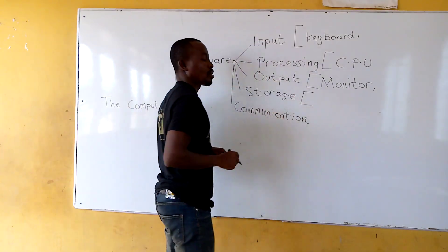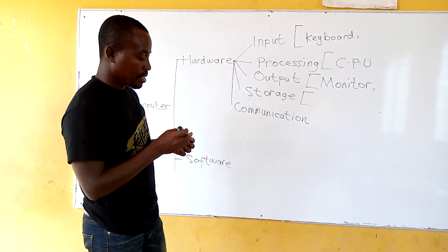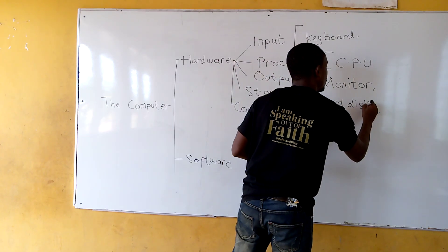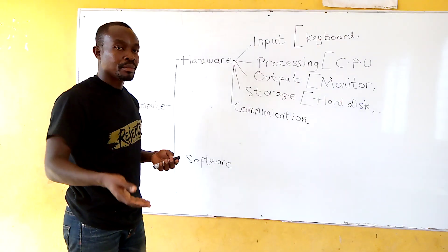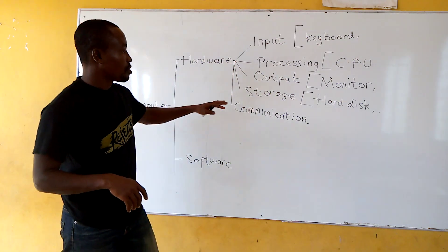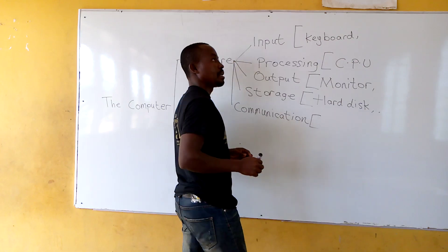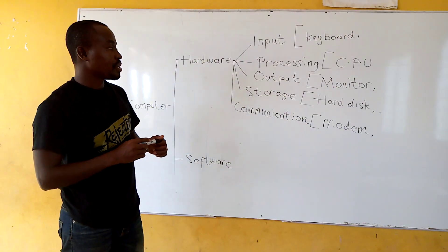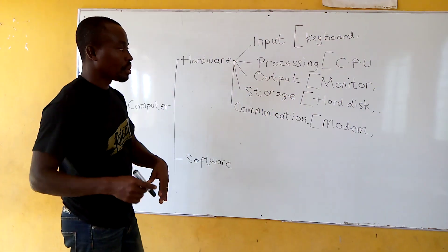Storage: storing the information that has been processed by the computer. One example of storage hardware is a hard disk. There are many other examples in today's world. I've given you an idea of some of them. And then the communication hardware — which is not in most books. The communication hardware tells you that after the computer stores information, sometimes it communicates and helps you to communicate with other people or other computers. One common example is the modem. Sometimes people even refer to the pen drive as communication hardware, because it is used to transfer information from one computer to another.